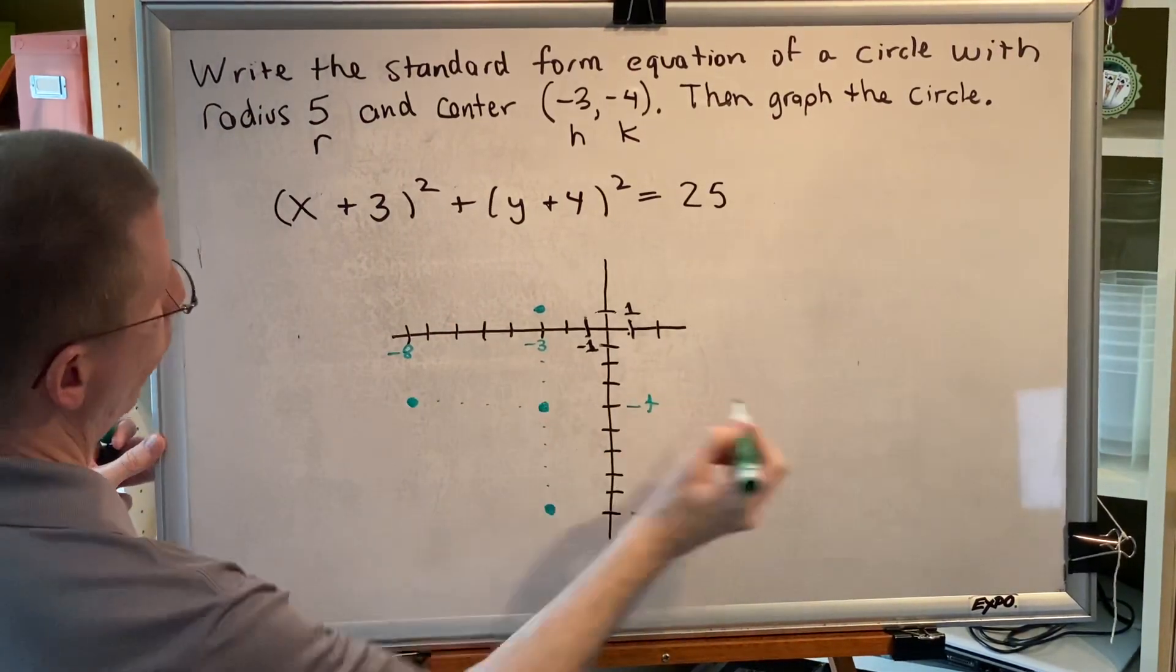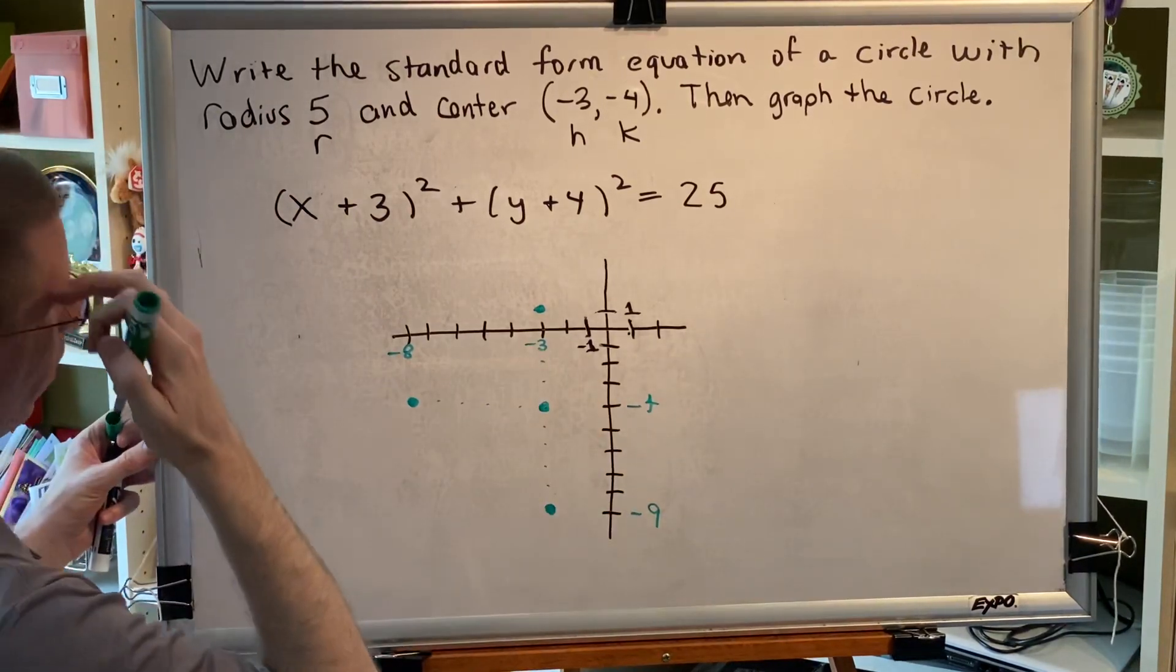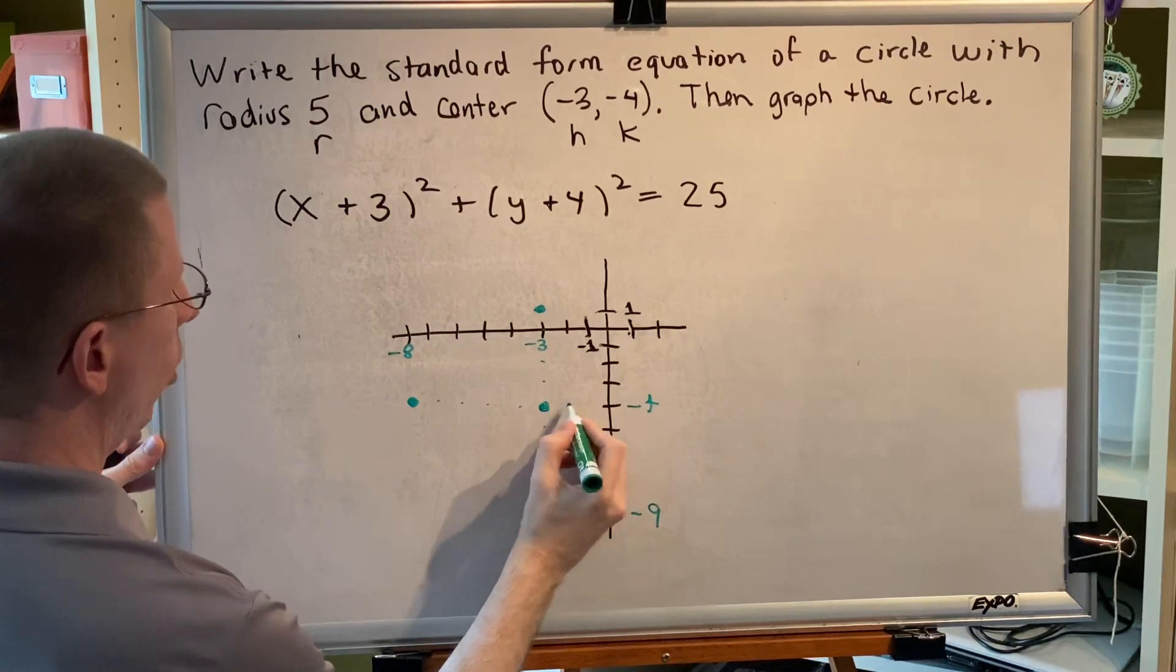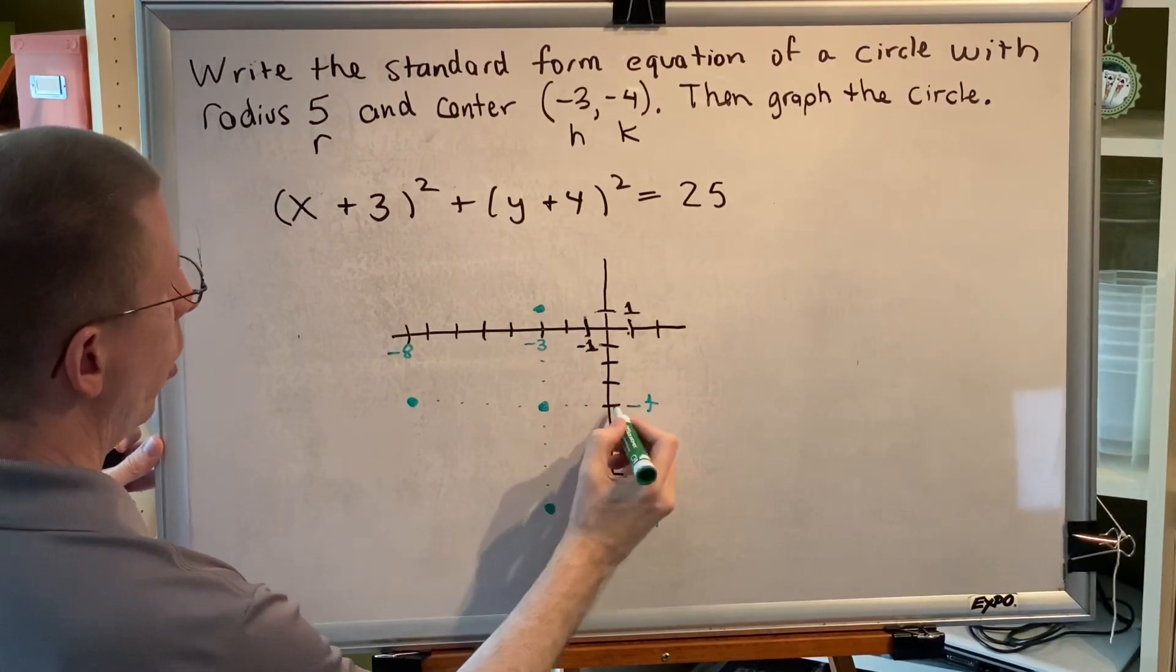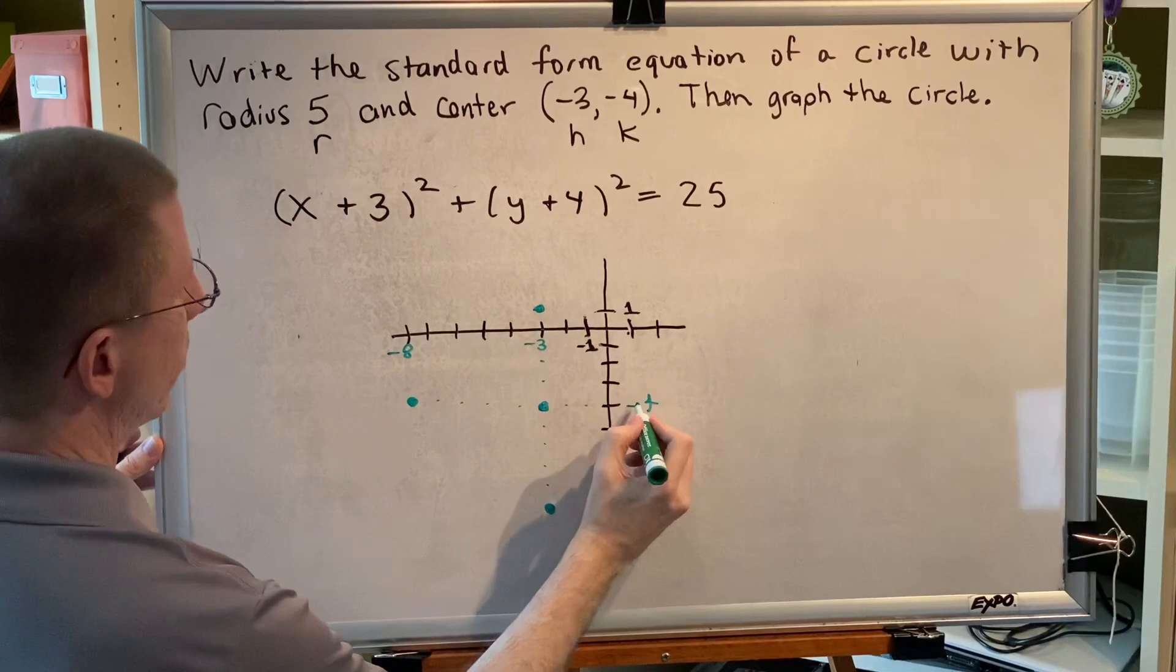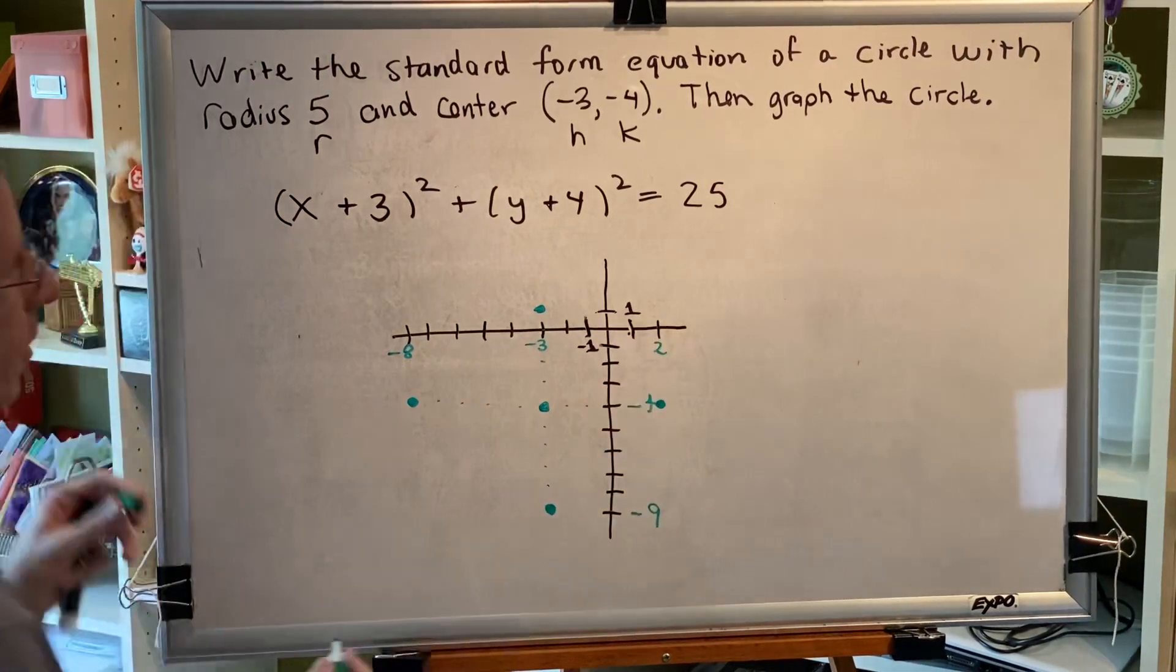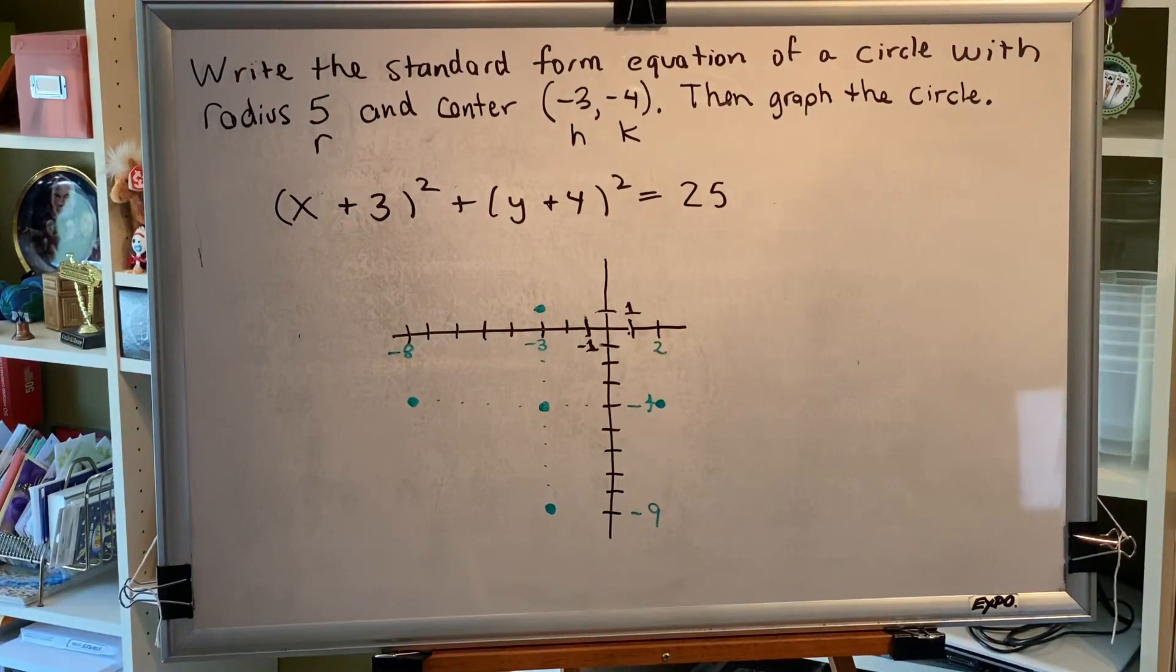And if I go to the right, starting at negative three and adding five, I should end up at two. Let's count. One, two, three, I'm sitting on the y axis, four, five. And indeed, I do end up at an x coordinate of two.